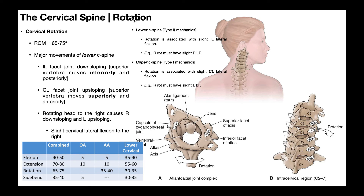Looking at the rotation range of motion: combined rotation is about 65 to 75 degrees. The lower cervical spine contributes almost half — 30 to 35 degrees — but the atlano-axial joint (C1-C2) contributes 35 to 40 degrees, which is actually a little more than half of the total rotation. The atlano-occipital joint between the occiput and the atlas does not allow rotation, just as the atlano-axial joint does not allow side bending or lateral flexion.